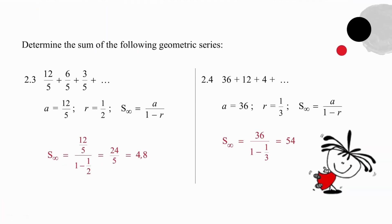In question 2.3, your ratio is a half, your a value is 12 over 5 and your sum to infinity is a rather clumsy calculation which produces an answer of 4.8 or 24 over 5. You can decide which you prefer.